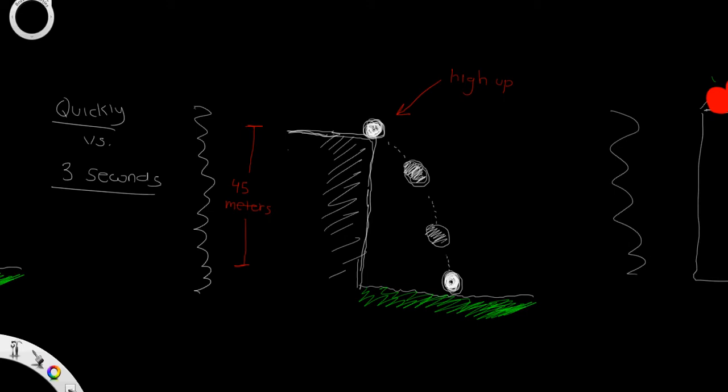Instead of saying the ball fell from high up, you can give a better idea by saying the ball fell from 45 meters. This gives us a better picture of how high the ball is.